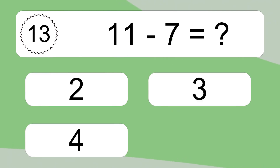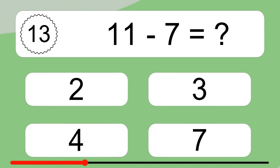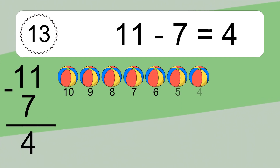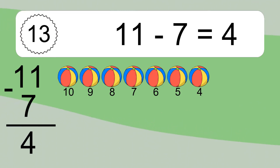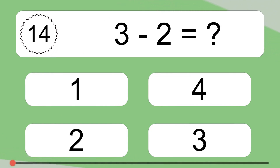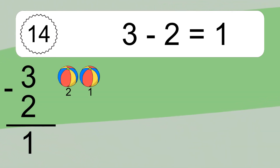11 minus 7 equals what? 11 minus 7 equals 4. Let's count it: 10, 9, 8, 7, 6, 5, 4.